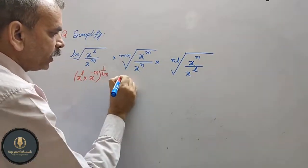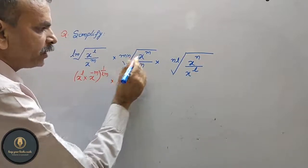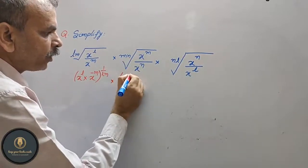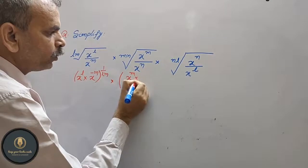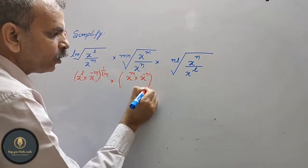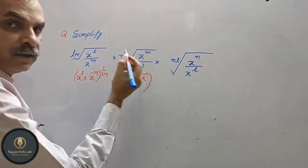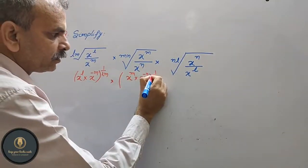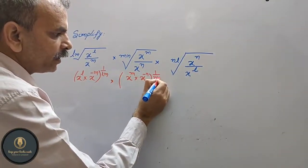Into the same: x to the power of m into x to the power of minus n, and whole to the power of mn, that is 1 by mn.